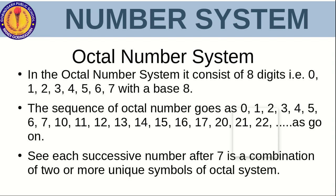Next is the octal number system. The octal number system consists of 8 digits: 0 to 7 — that is 0, 1, 2, 3, 4, 5, 6, 7. There are 8 digits total; don't forget to include 0. The sequence of octal numbers goes: 0, 1, 2, 3, 4, 5, 6, 7, then 10, 11, 12, 13, 14, 15, 16, 17, 20, 21, and so on. There is no digit greater than 7. The highest digit is 7 and the lowest is 0. The octal number system is used for memory locations in a computer.